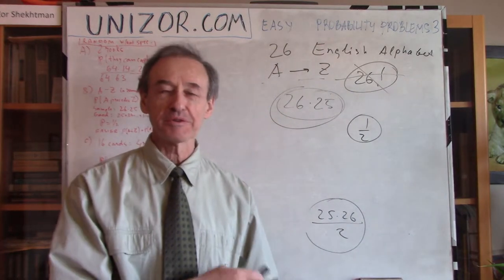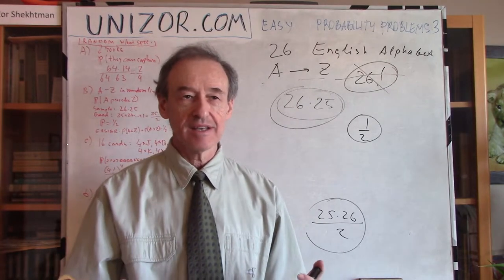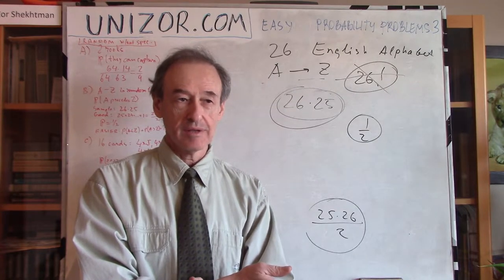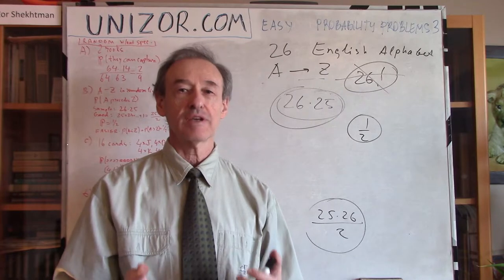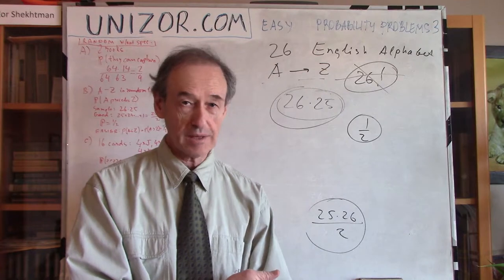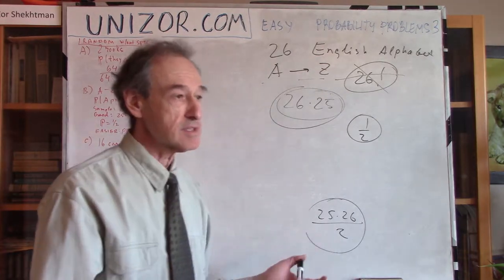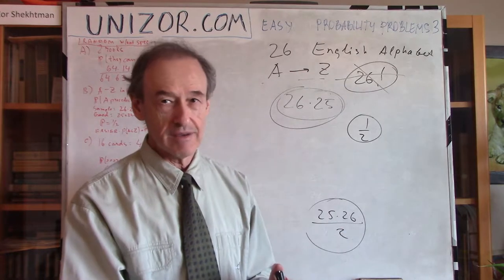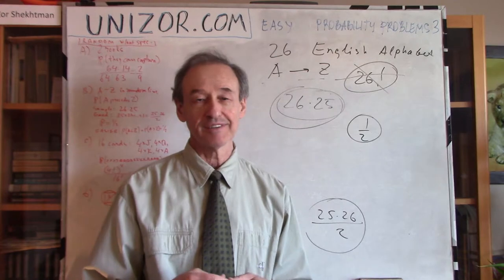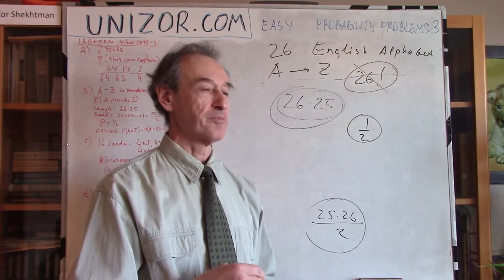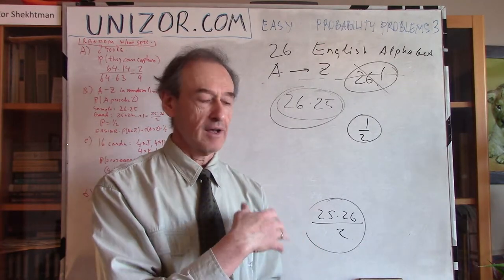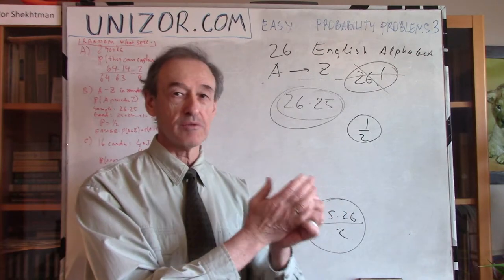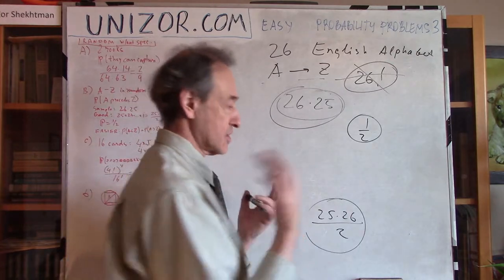Why go through all that trouble? Let's think about it differently. A and Z can be positioned such that either A precedes Z or Z precedes A. The number of events where A precedes Z equals the number where Z precedes A, since for each arrangement you can simply swap them. So total probability 1 is evenly split, giving 1/2 — which we can reach through this logical shortcut. But I wanted to illustrate the classical approach: count elementary events and take the ratio.